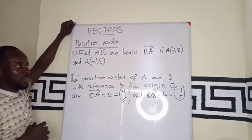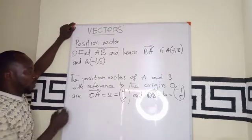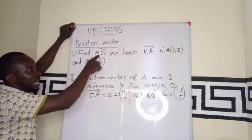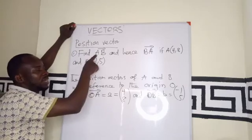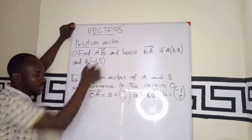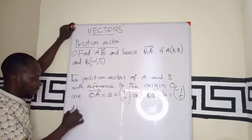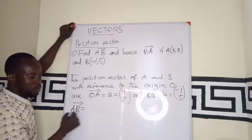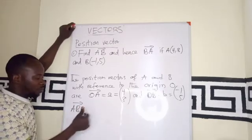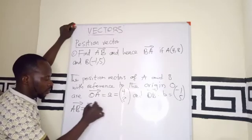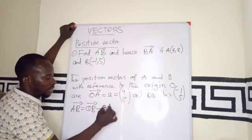From the previous tuition that we have, we said to find a vector AB, given the position vector A and B, it becomes vector AB equals to the position vector of B minus the position vector of A.